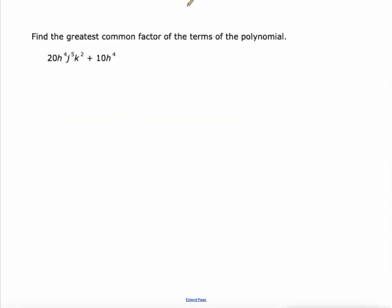Find the greatest common factor of the terms of this polynomial. So instead of being separated by a comma, they're separated by an addition sign. It really doesn't change anything. 20 and 10, their greatest common factor is 10. Then I also see h to the 4th and h to the 4th. They're both divisible by h to the 4th.